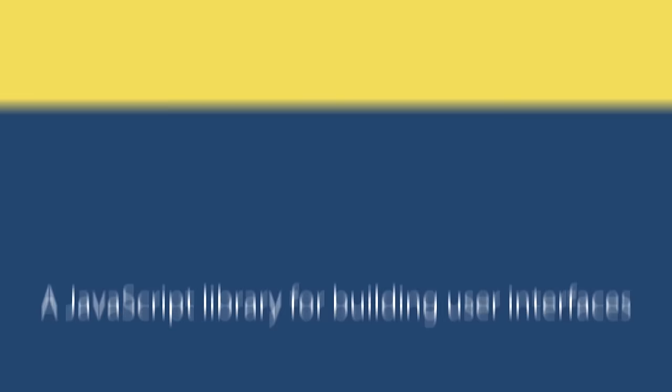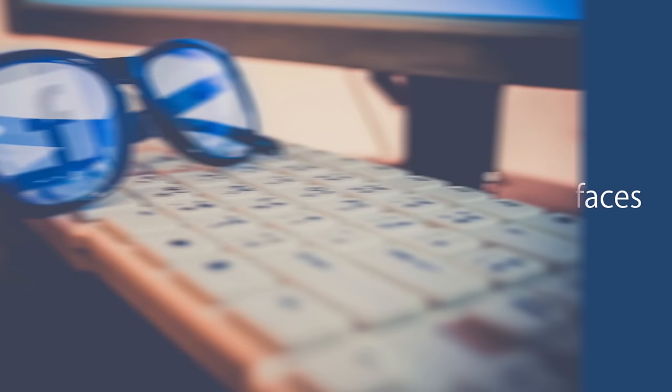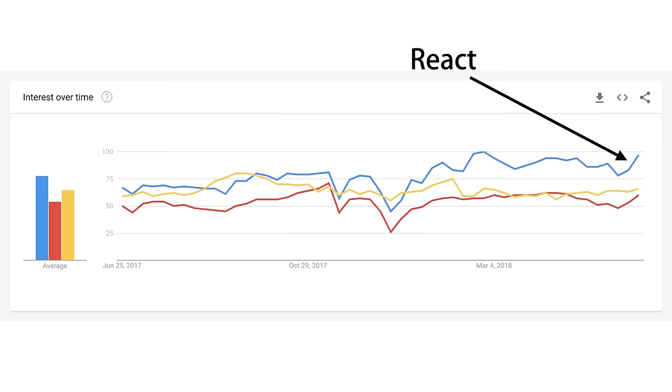React is a JavaScript library for building fast and interactive user interfaces. It was developed at Facebook in 2011 and currently it's the most popular JavaScript library for building user interfaces. As you can see on Google Trends, React is dominating the space of libraries and frameworks, with the other two players being Angular and Vue. If you want to expand your job opportunities as a front-end developer, you should have React on your resume.